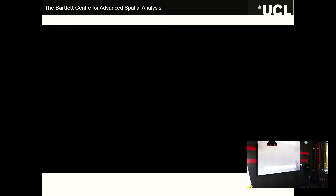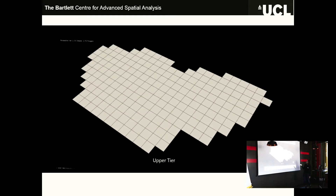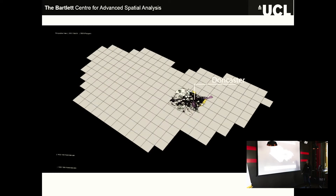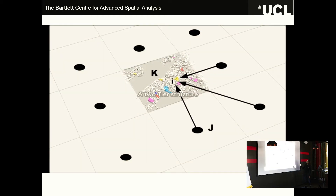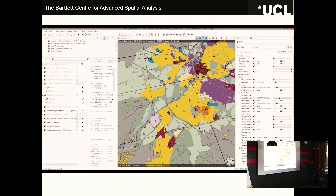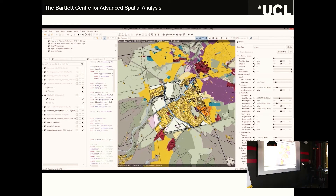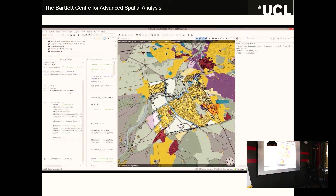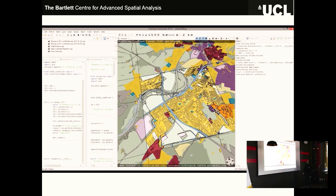Further to that, we can link it to planning zones and therefore add all the building footprints or planning zones. This is Sheffield, Doncaster, and Barnsley. If we go to Doncaster, we can do a two-tier structure and get all this modeling goodness and actually start populating buildings with population and see how that relates to actual residential capacities.